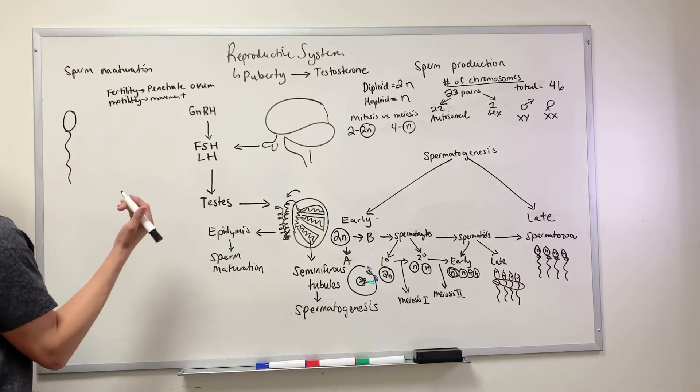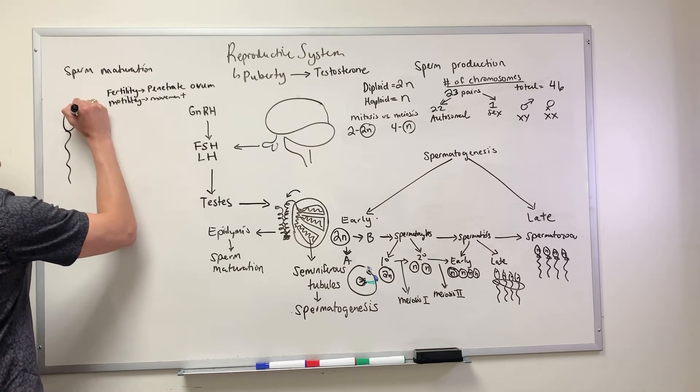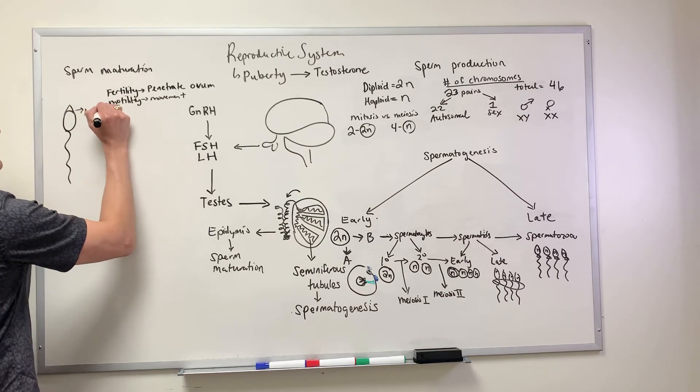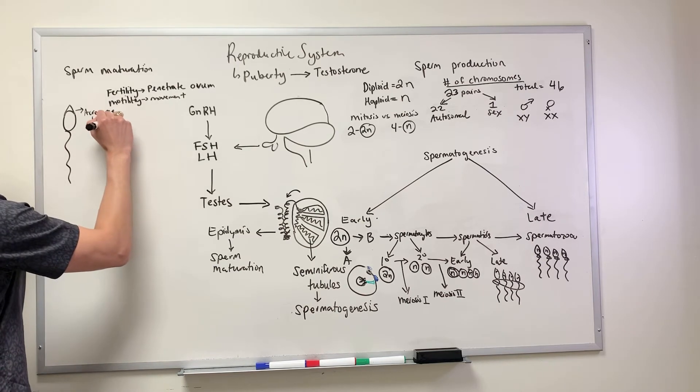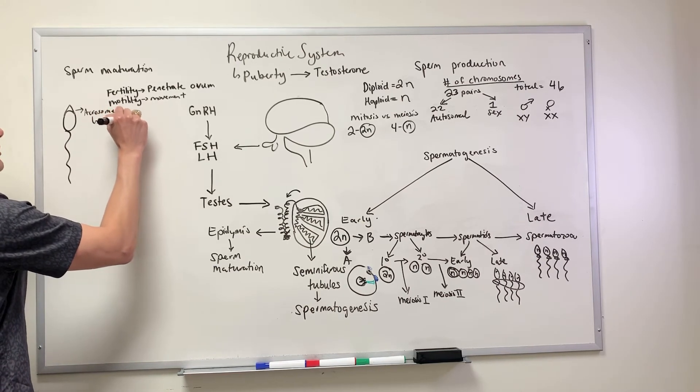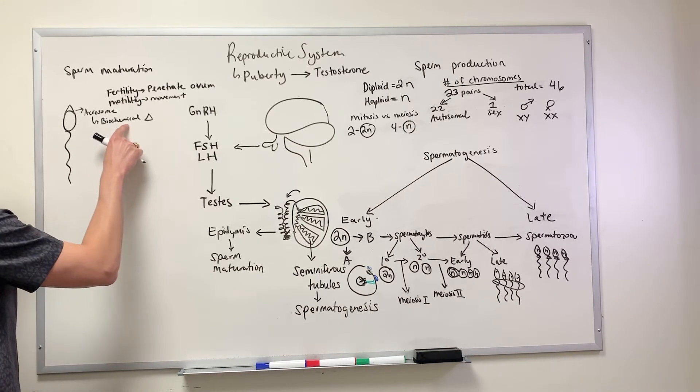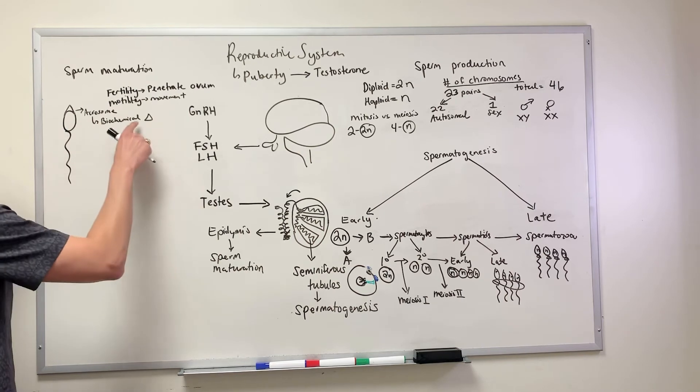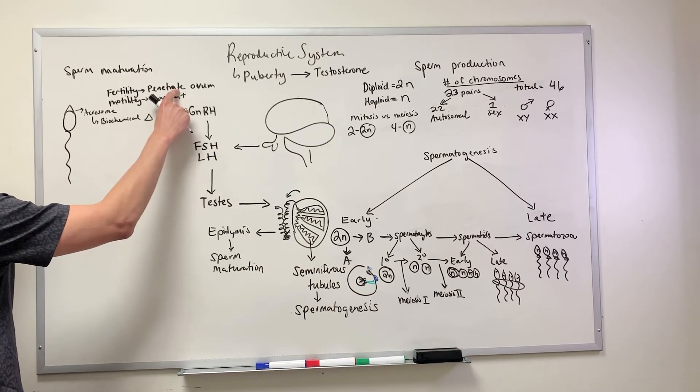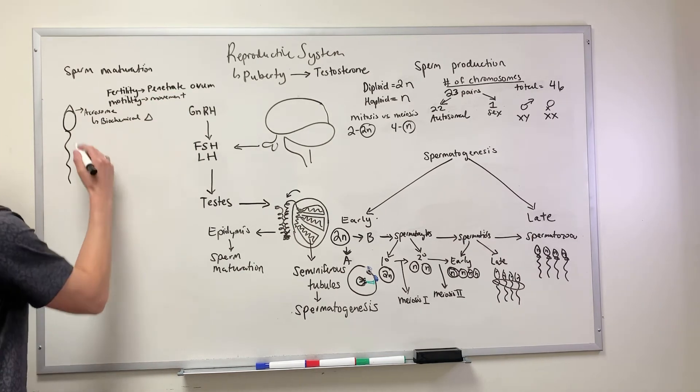Some of the structural modifications that happen: here at the top of this chromosome, this is what's known as the acrosome. This acrosome undergoes biochemical changes and what these biochemical changes do is improve the machinery so the sperm cell can penetrate the ovum.